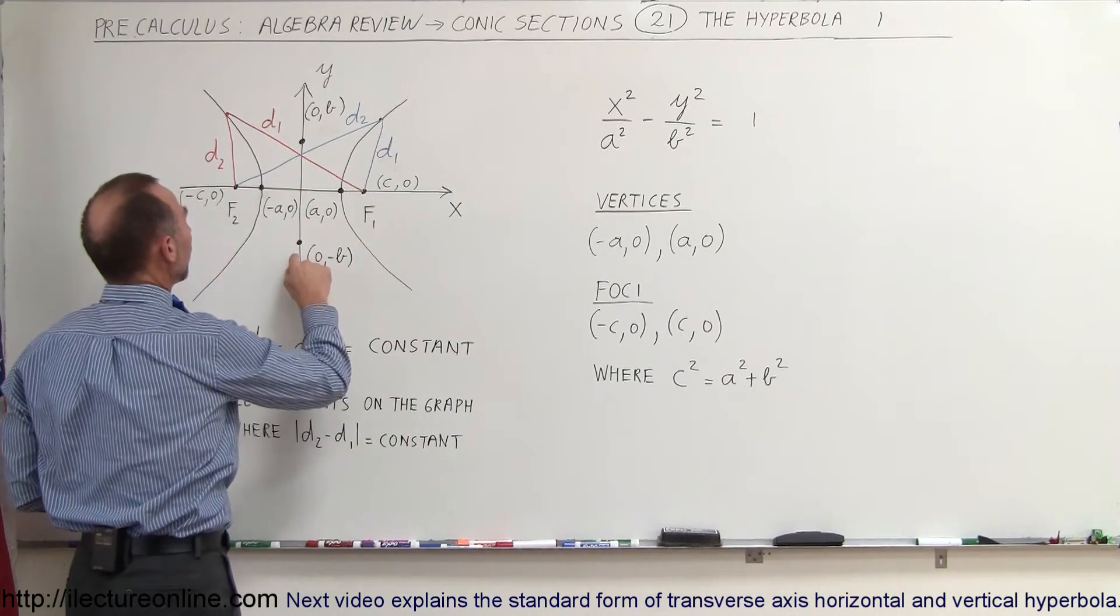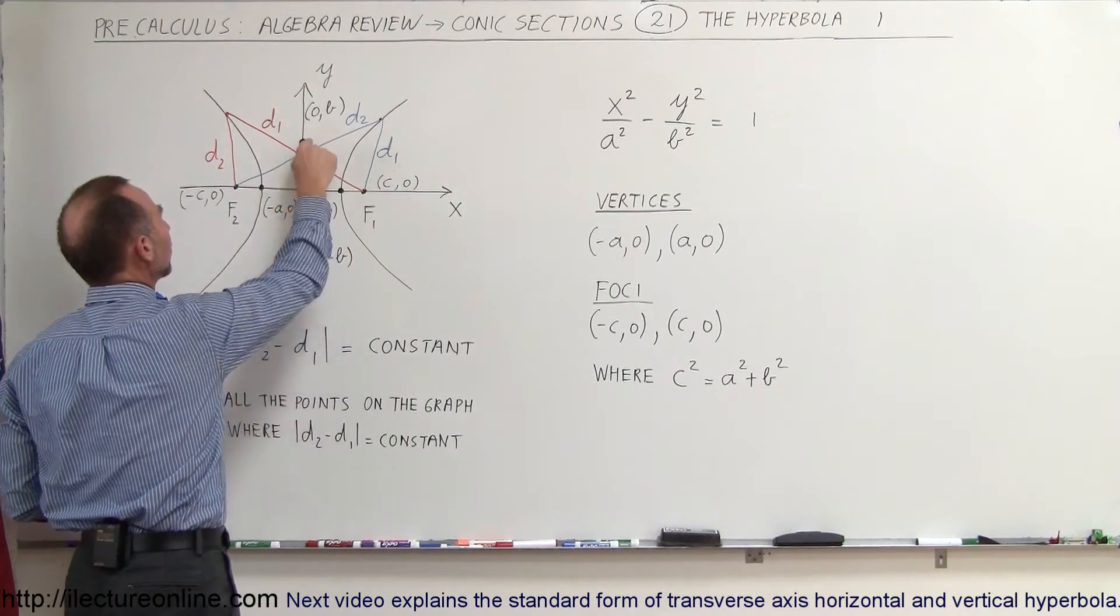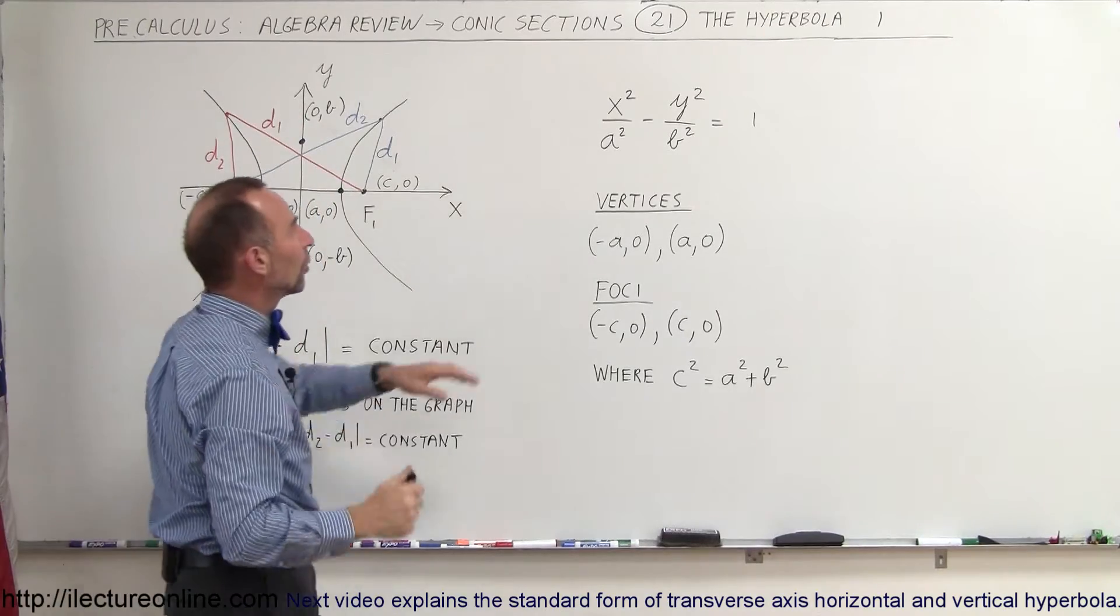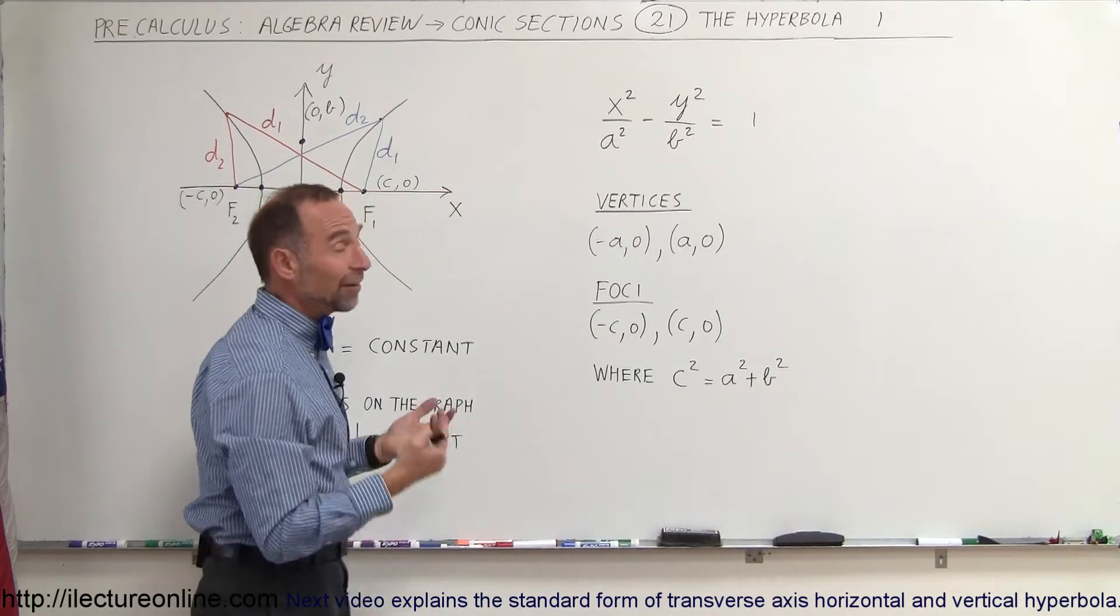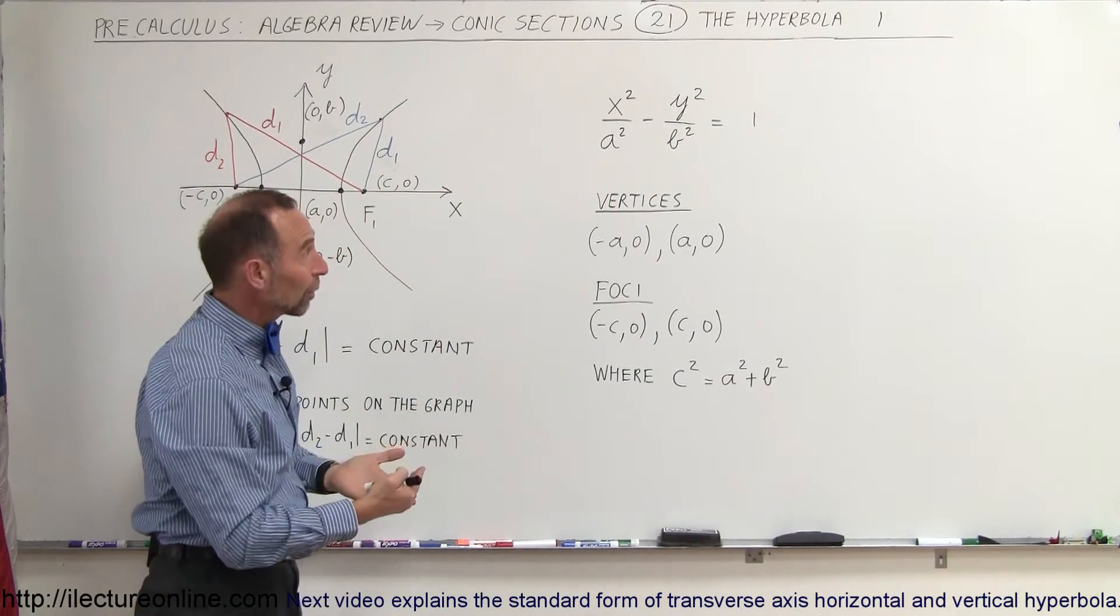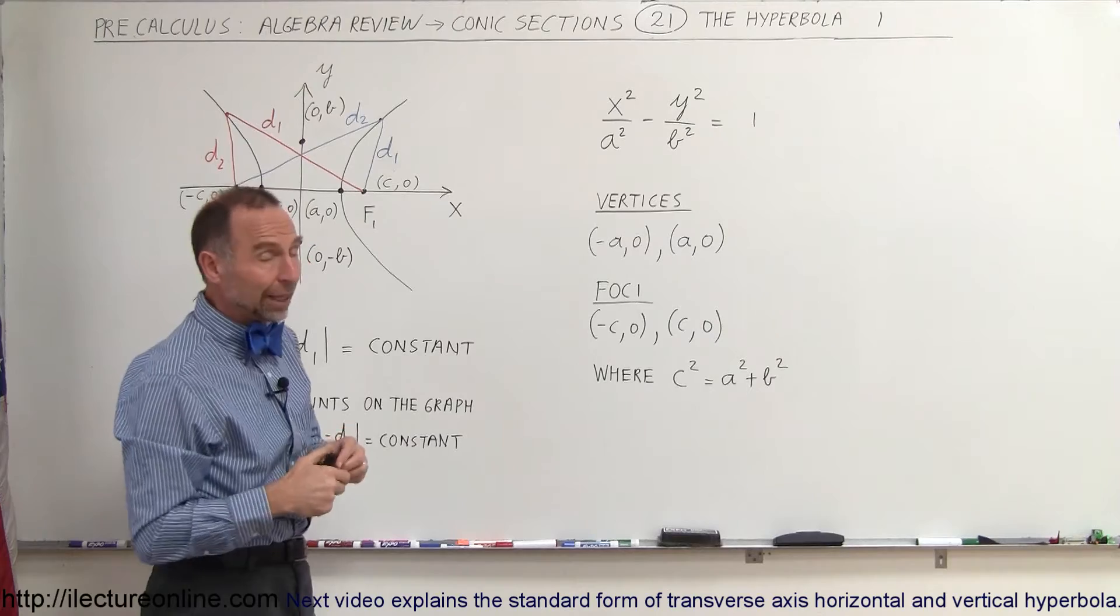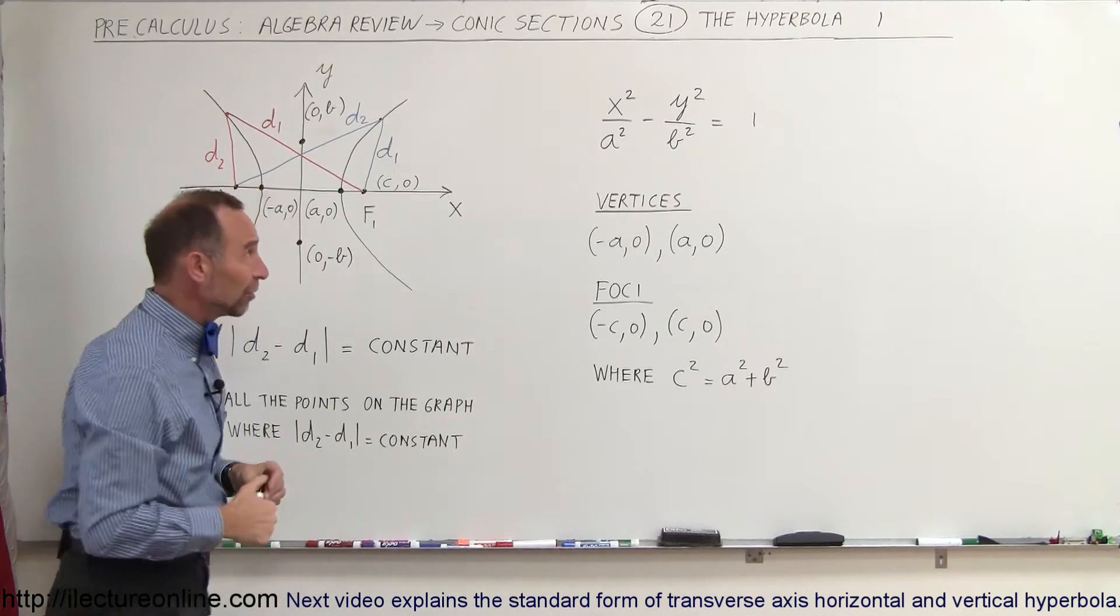And then the points b and -b, so this is b and -b on the y-axis, those are determined by the number below the y variable. And so we have x²/a² - y²/b² = 1. And that would then be the general equation of a hyperbola.